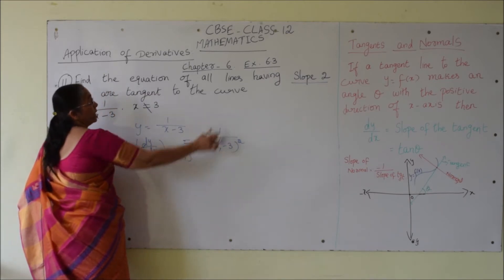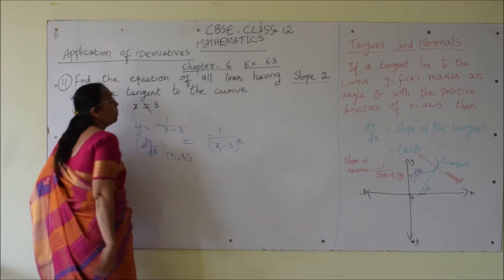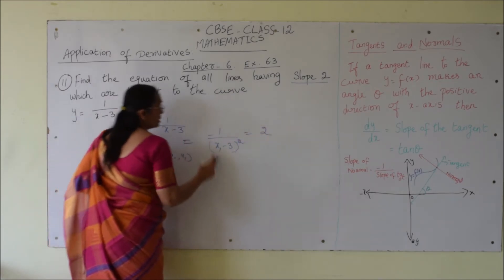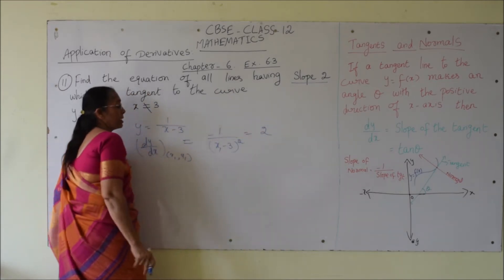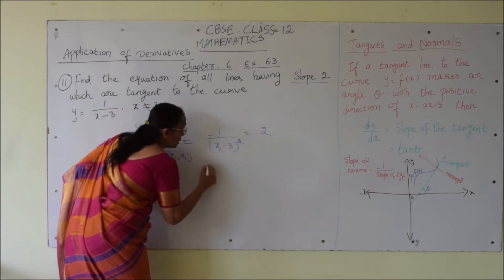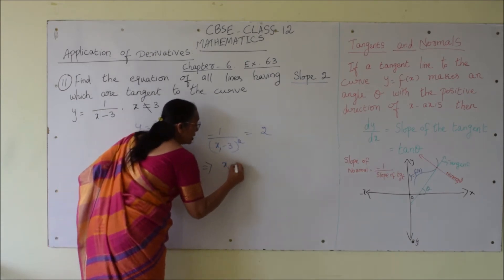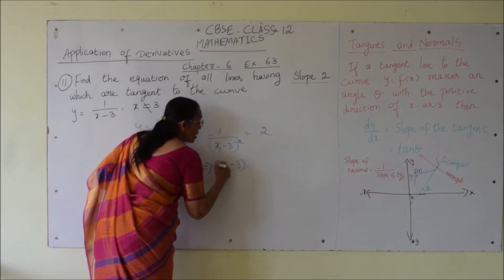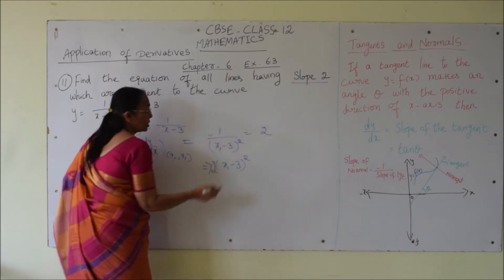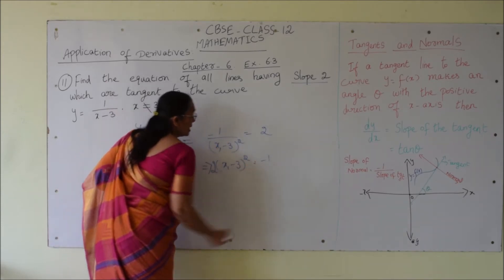This slope of the tangent is set equal to the given slope 2, so negative 1 divided by (x1 minus 3) whole square equals 2. By cross multiplication, this implies (x1 minus 3) whole square times 2 equals negative 1.